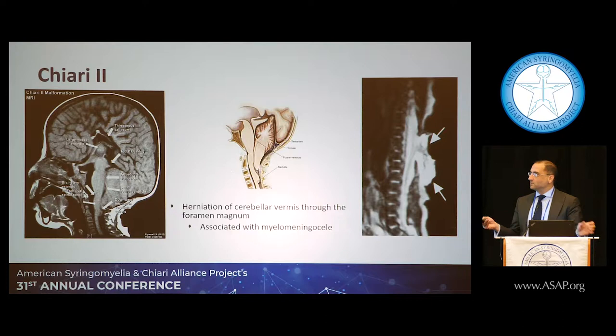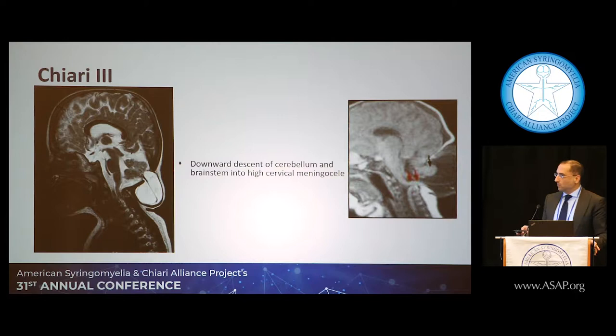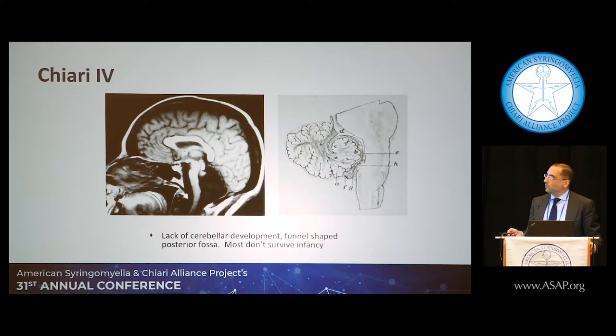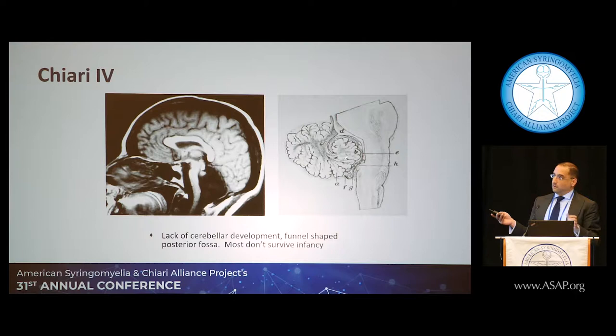Chiari 3 is an even rarer variant where there's a sack outside the skull underneath the skin with tissue protruding into it — spinal fluid in what's called a meningocele, with more tissue herniating into that sack. Then Chiari type 4 involves underdevelopment of the cerebellum. This is the original picture from the 1895 paper, and you can see the cerebellum just doesn't have a normal appearance.